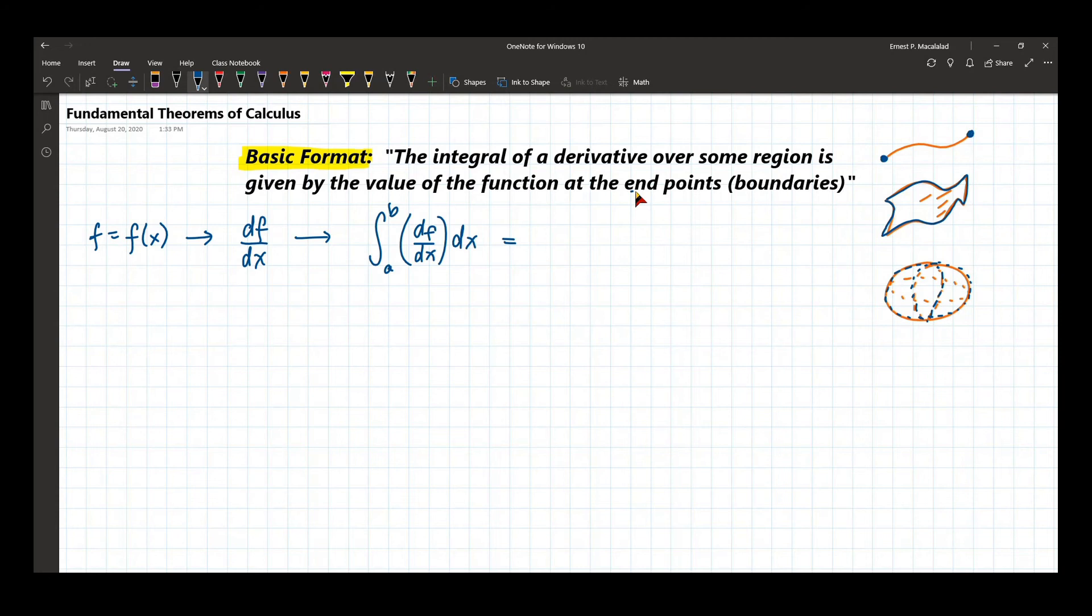This is the derivative. This tells us your region. If this is only dx, so this is one dimension. This is equal to the function itself at the endpoints.